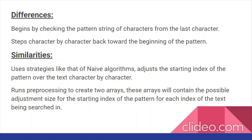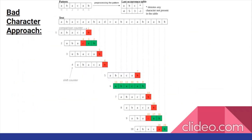A few differences between the Boyer Moore search algorithm and other naive algorithms is that it begins by checking the pattern of string characters from the last character, not the beginning, and steps character by character backwards toward the beginning of the pattern. With the Boyer Moore search algorithm, there are two basic approaches.